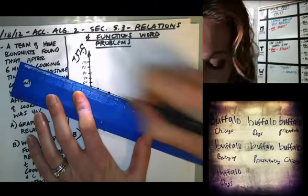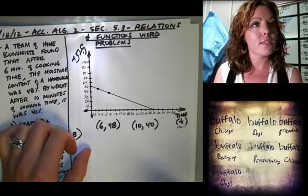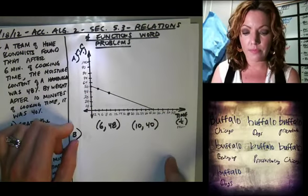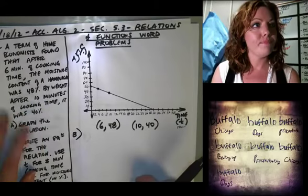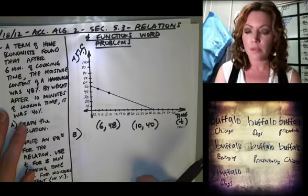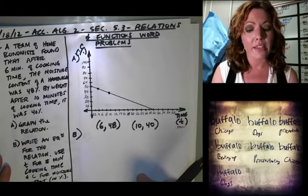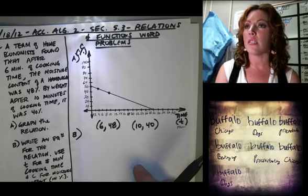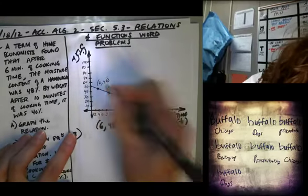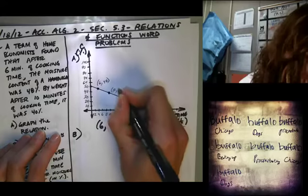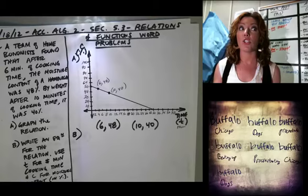Would it make sense to extend these lines past our axes? No. Why not? There's no such thing as a negative percent of something, and there's no such thing — at least in this dimension — as negative time. So let's label our coordinates (6, 48) and (10, 40).